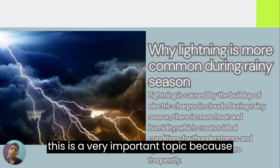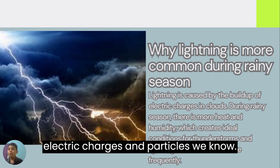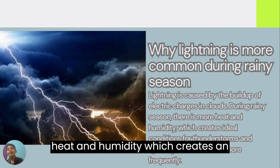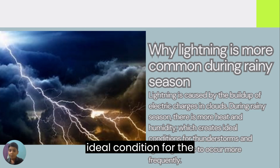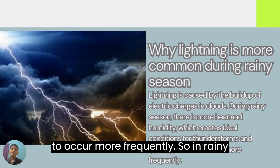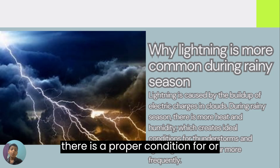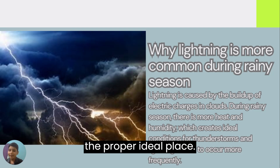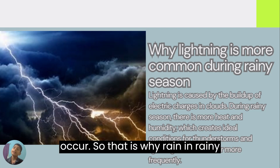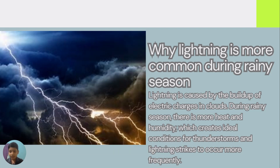Why is lightning more common during the rainy season? Lightning is caused by the build-up of electric charges in particles. During the rainy season, there is more heat and humidity, which creates an ideal condition for thunderstorms and lightning strikes to occur more frequently. That is why lightning occurs most often in the rainy season.